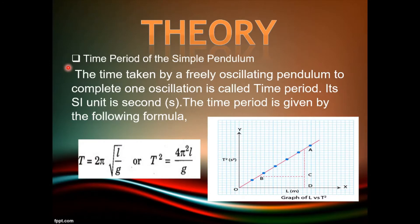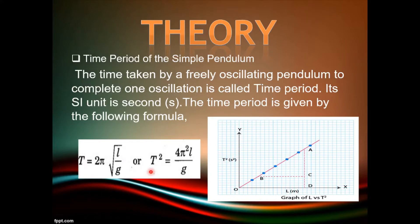Theory: Time period of the simple pendulum. The time taken by a freely oscillating pendulum to complete one oscillation is called time period. Its SI unit is second. The time period is given by the following formula: T equals to 2π√(L/G), or T² equals to 4π²L/G.